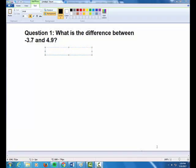Okay, so if you weren't able to answer question one correctly, I'm pretty sure I know what you did wrong. So let's take a look. Question one says, what is the difference between negative 3.7 and 4.9?